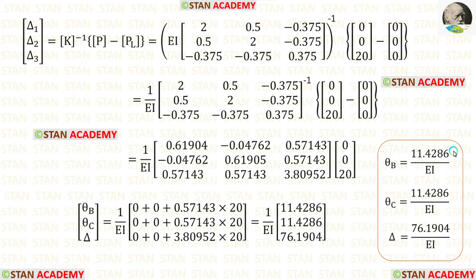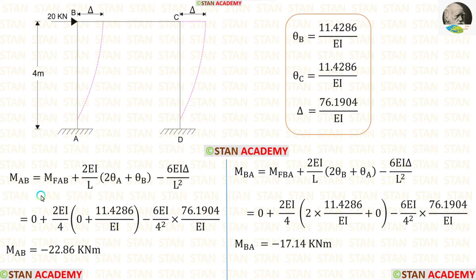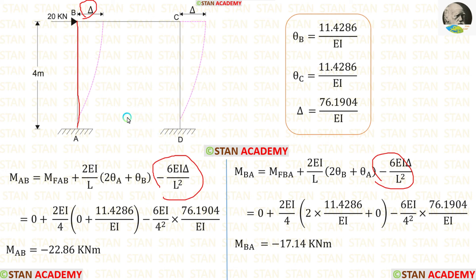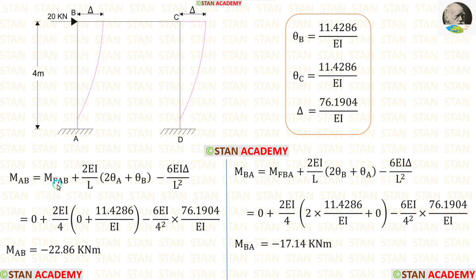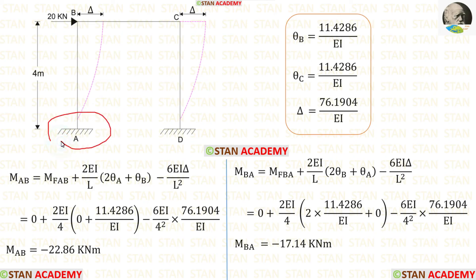Now let us make the slope deflection equations and apply these three values to get the final moments. First, the slope deflection equations for column AB. Column AB is subjected to sway, so in the equations we add the moments due to sway. Since sway is towards the right, these moments will be negative. Applying the fixed end moments (zero) and length of AB = 4, and noting that at the fixed support A, θA = 0, and substituting the values of θB and delta, we obtain MAB and MBA.